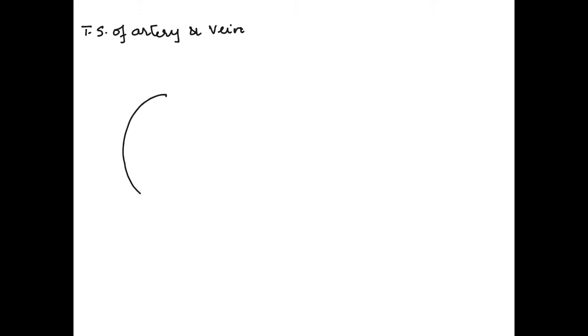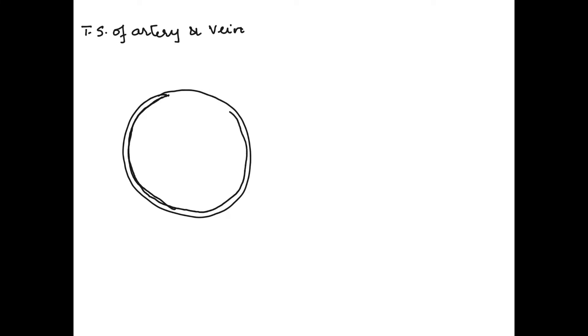In this video I'm going to explain the structure of blood vessels — the transverse or cross-section of an artery and a vein. Both artery and vein have three layers: an outer layer, a middle layer, and an inner layer, and these three layers show differences in the artery and vein.